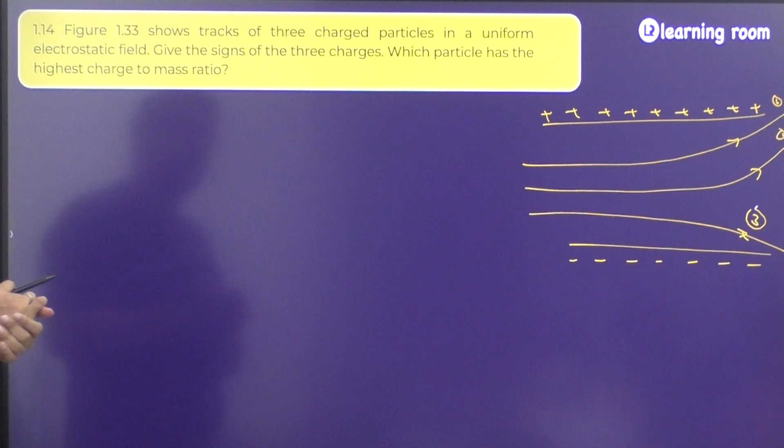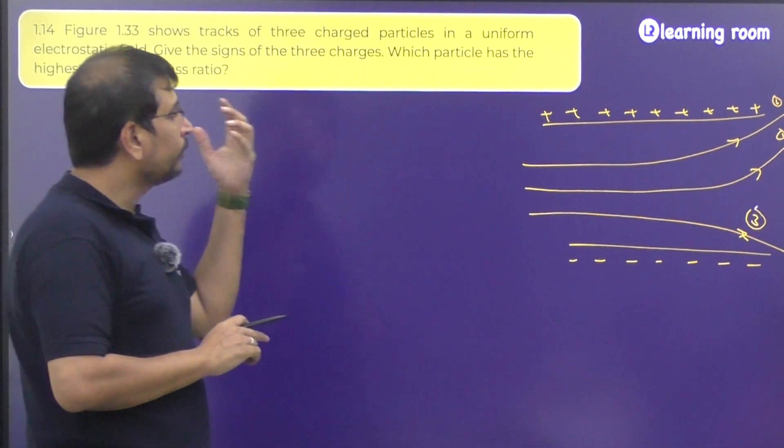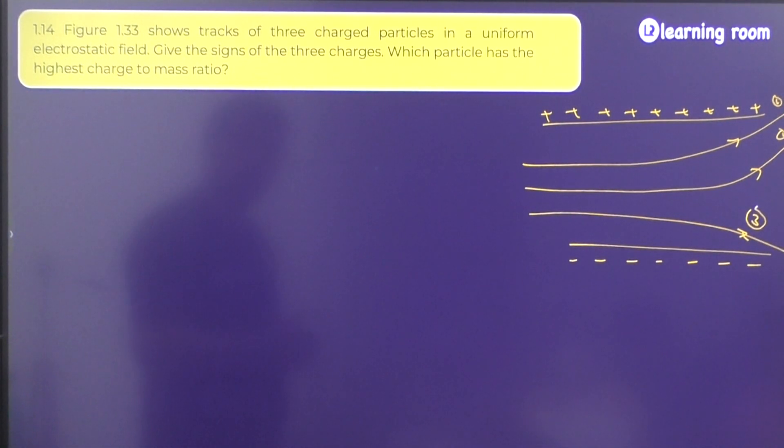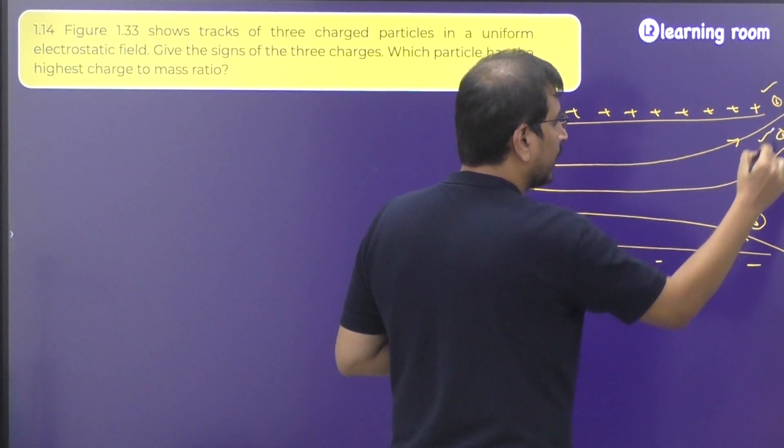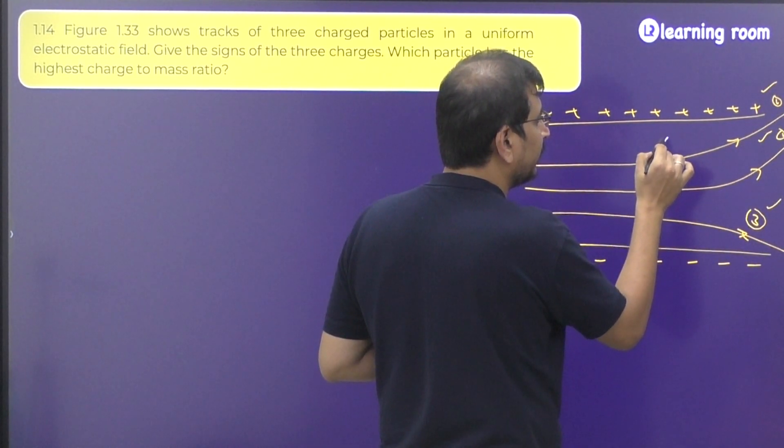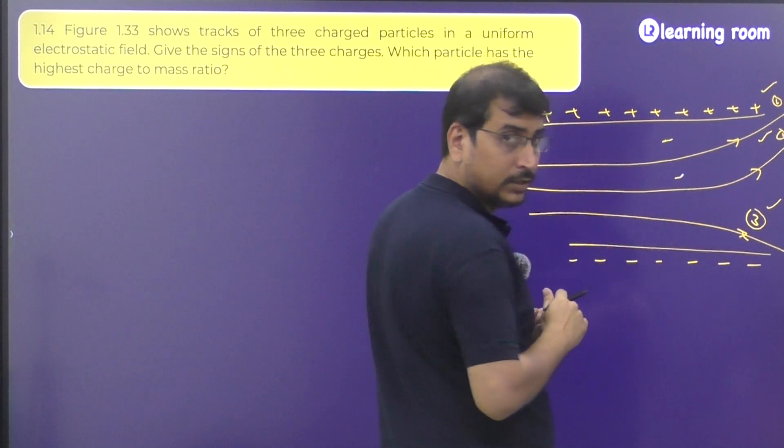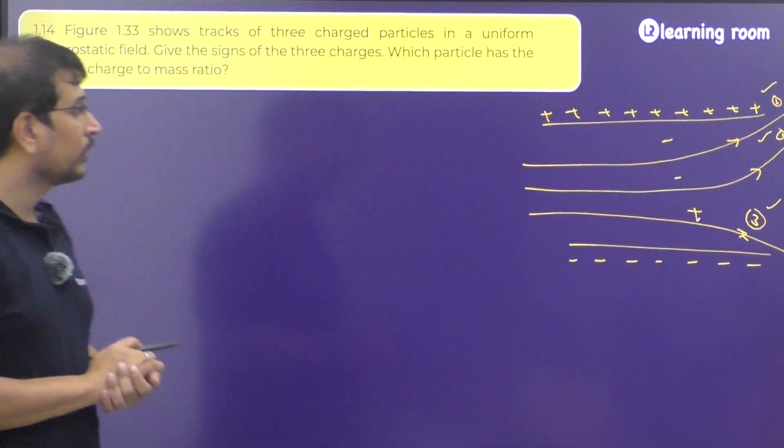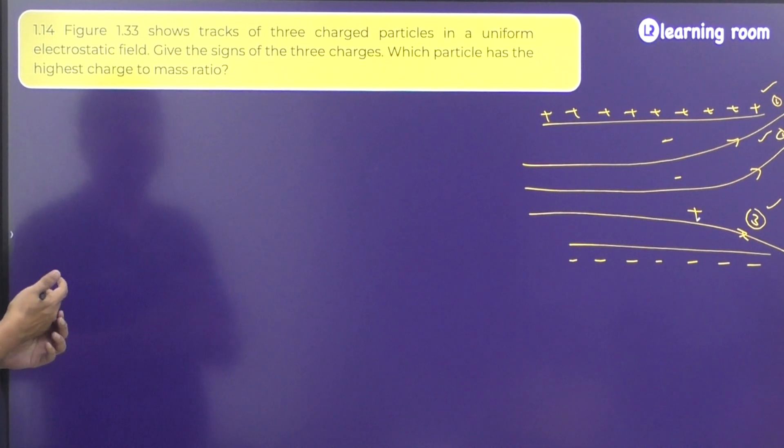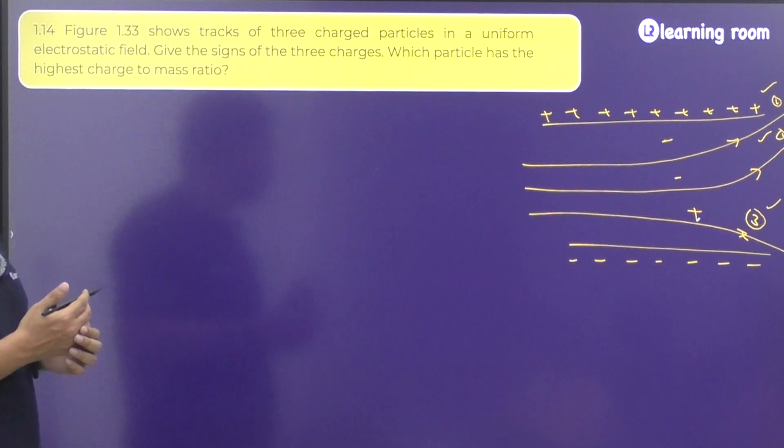Figure 1.33 shows tracks of three charged particles in a uniform electrostatic field. Give the signs of the three charges. So the first charge, second charge and third charge. First and second are negative and the third one is obviously positive. Which particle has the highest charge to mass ratio?